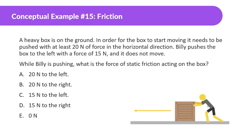Similar problem: a heavy box on the ground needs at least 20 newtons to start moving. Billy pushes the box to the left with a force of 15 newtons and it does not move. The force of static friction acting on the box should be 15 newtons to the right.